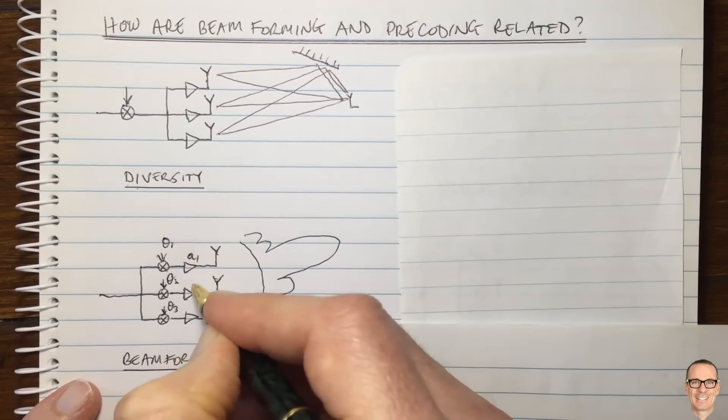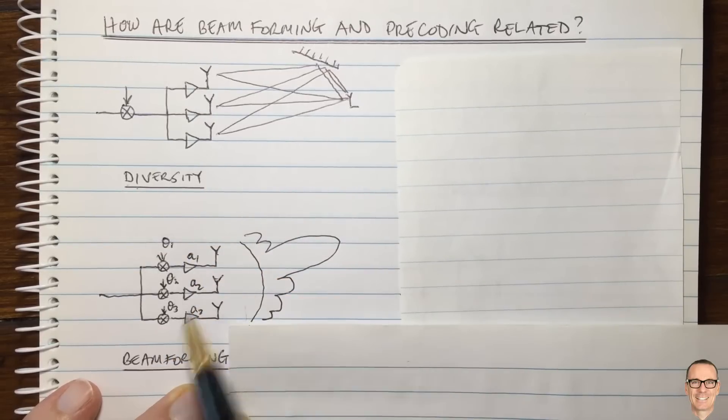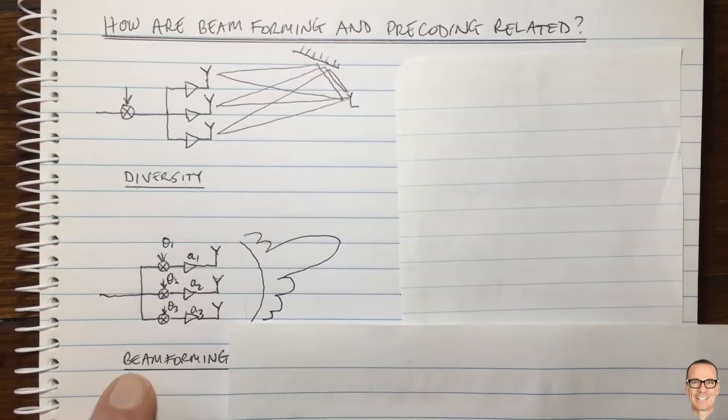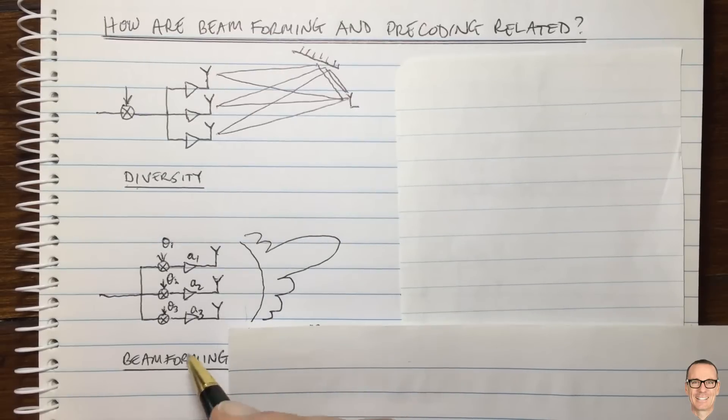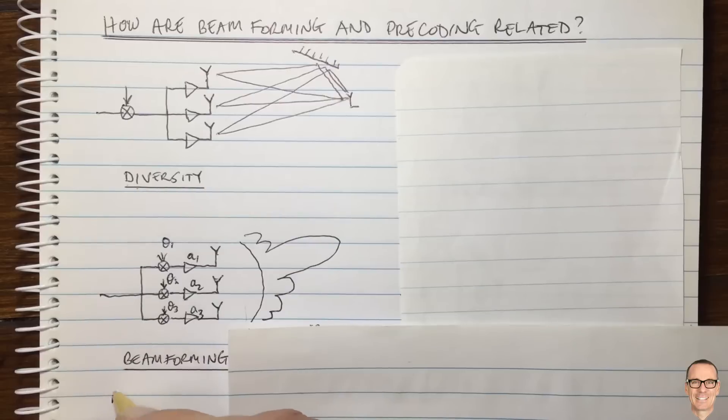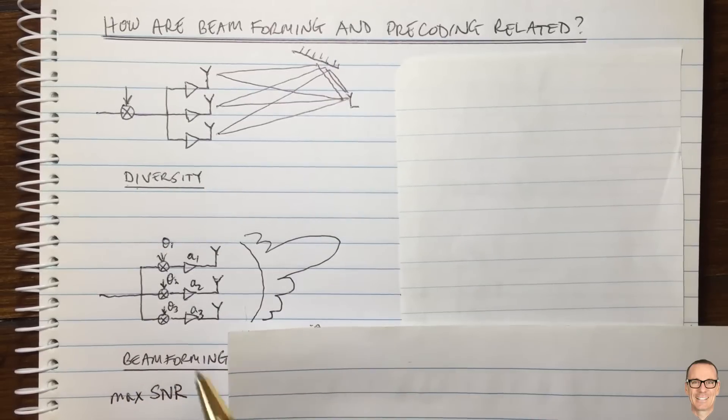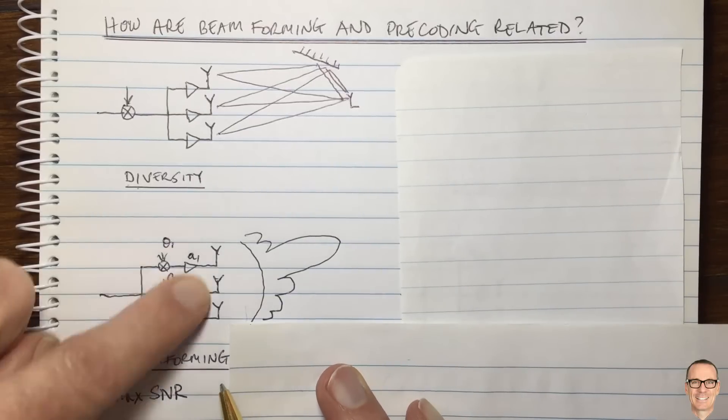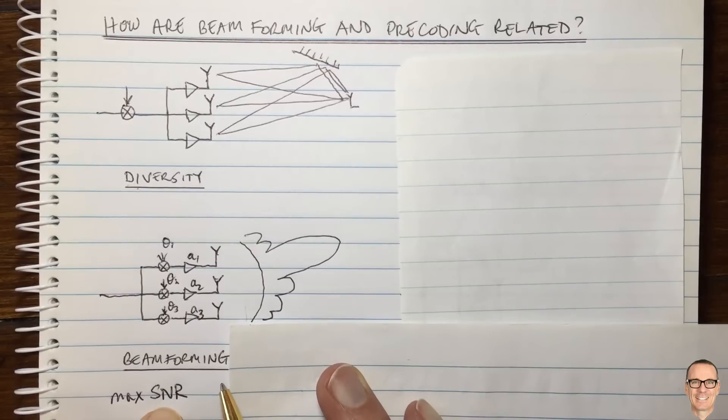We can also have different amplitudes off each of the antennas: A1, A2, and A3. If we have different amplifiers, then we have the possibility of also adjusting the amplification. This is still part of beamforming. And what beamforming tends to be related to is when you choose these parameters to maximize the signal-to-noise ratio for our intended receiver.